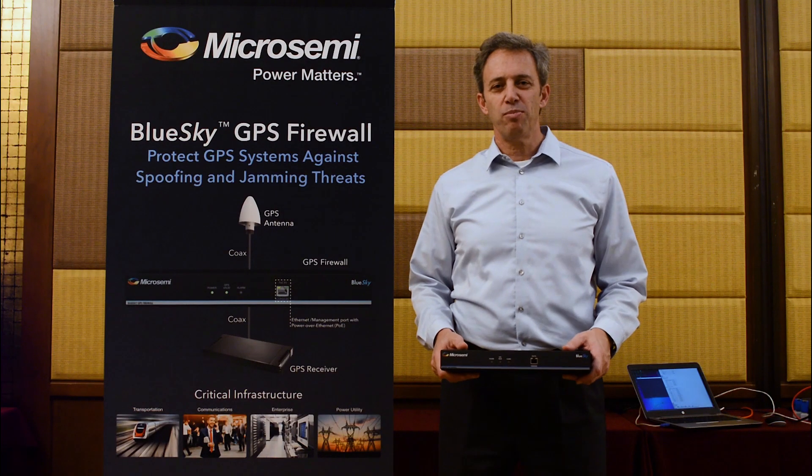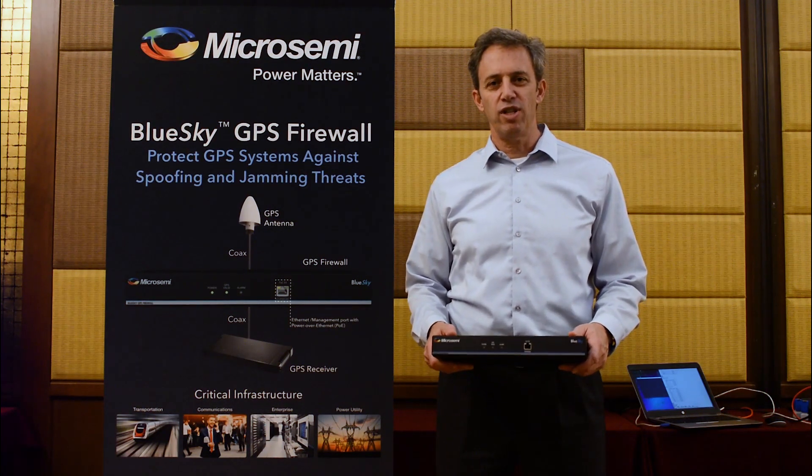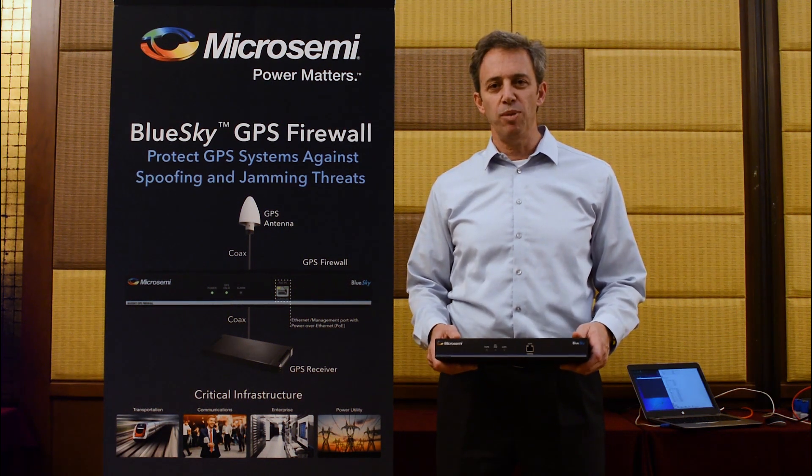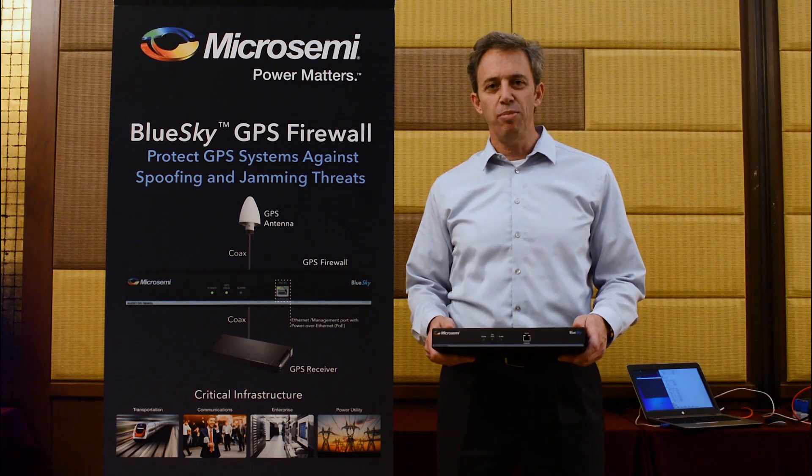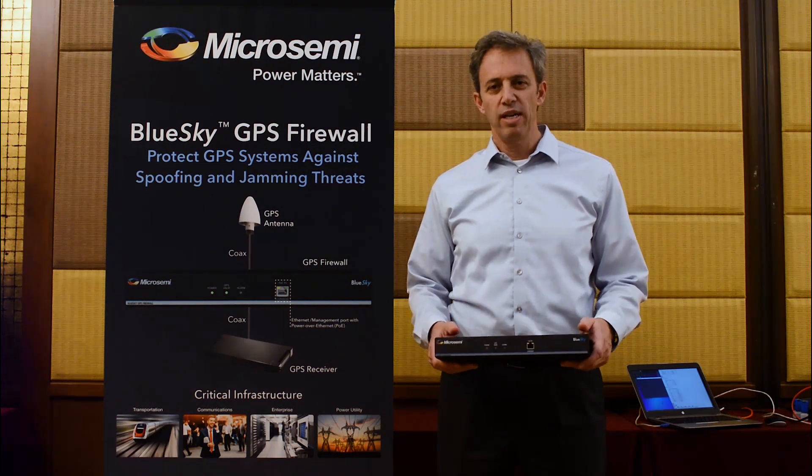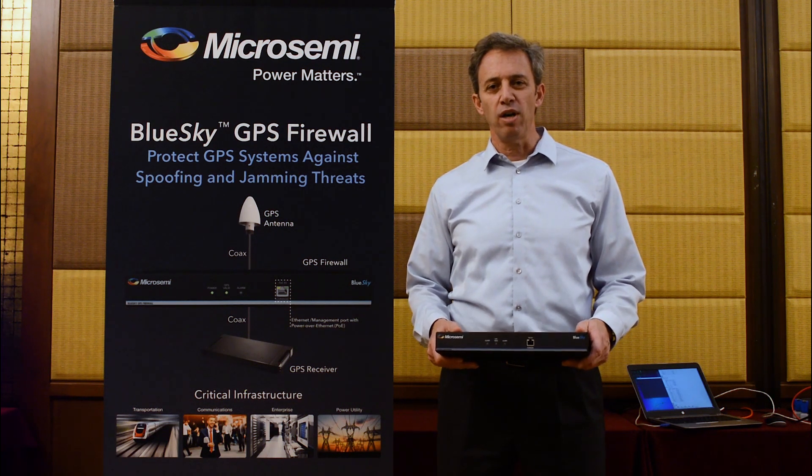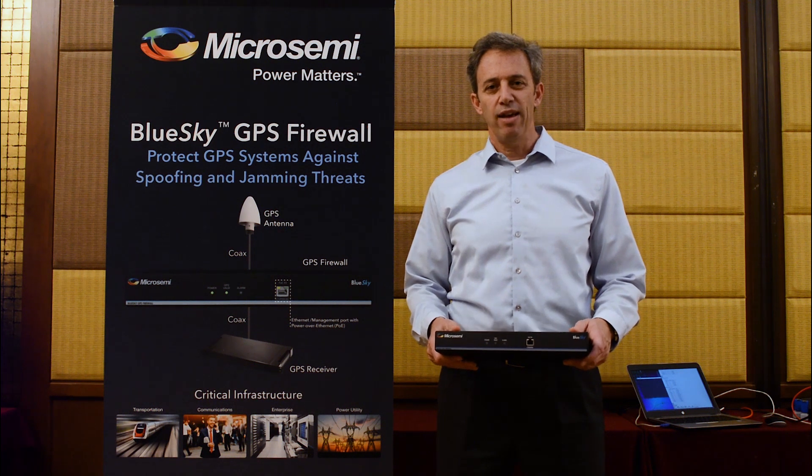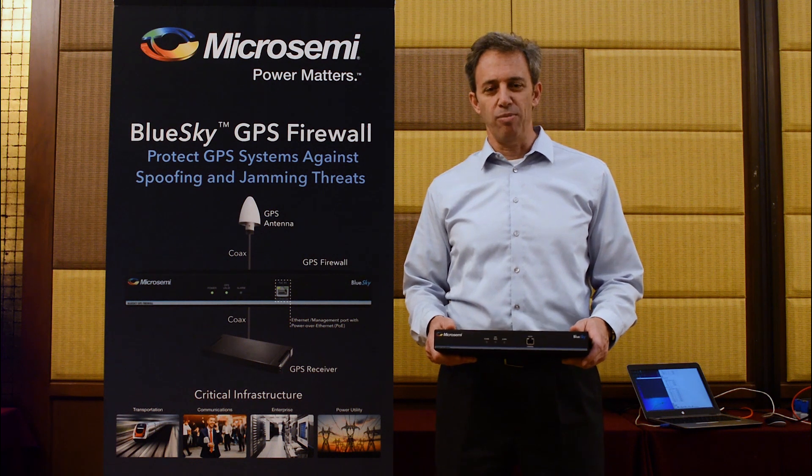This demonstration provided an example of how the blue sky GPS firewall can protect against GNSS vulnerabilities. In the case of a complete loss of the GPS signal, the blue sky GPS firewall continued to provide a GPS signal output using the hardened output of the unit. In the case of a more sophisticated spoofing event, the blue sky GPS firewall cut off the output signal coming out of the validated output, and then also continued to provide a complete GPS signal out of the hardened output.